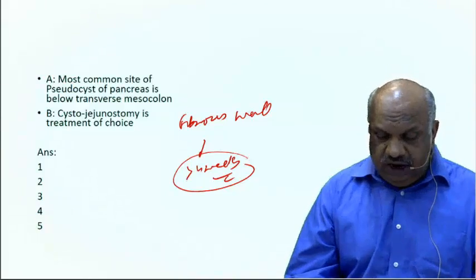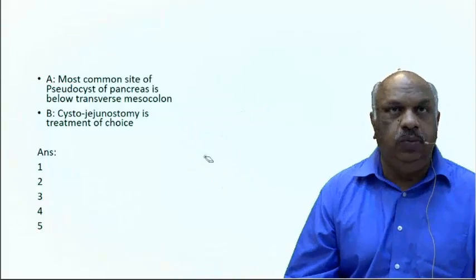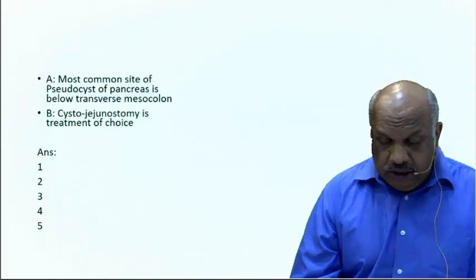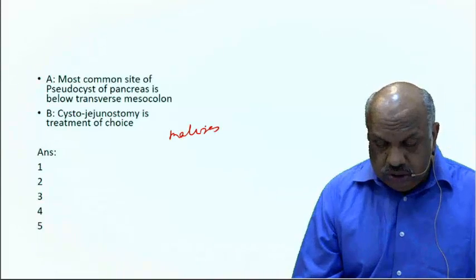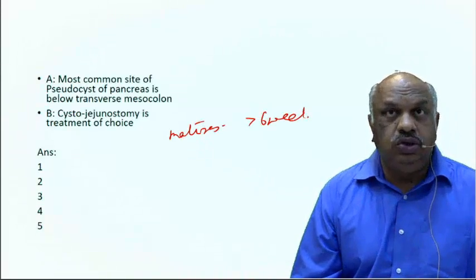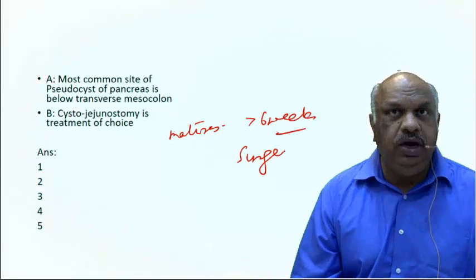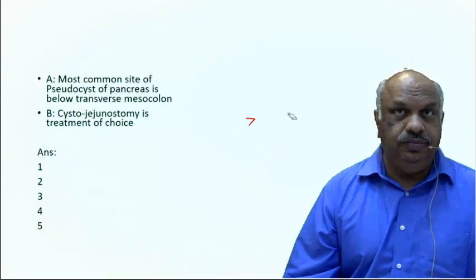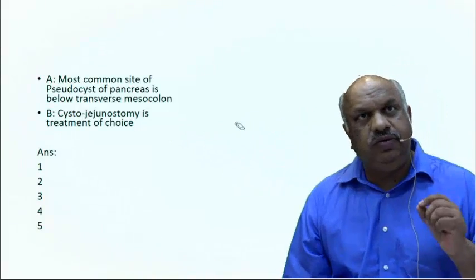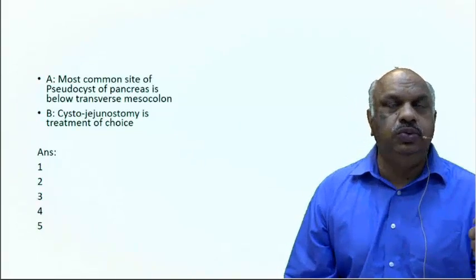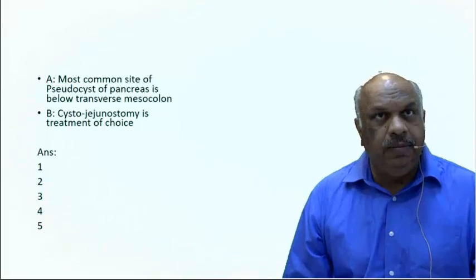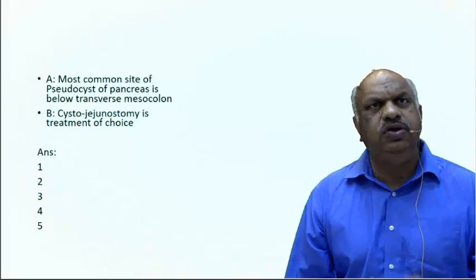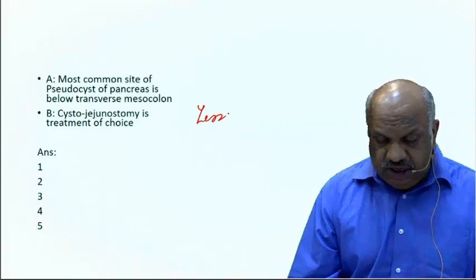The fibrous wall is a reactionary inflammatory wall. It matures only after six weeks, which is why surgery can only be done after six weeks — the wall needs to be mature enough to hold sutures. So pseudocyst is a peripancreatic fluid collection with a fibrous wall, forming after four weeks and maturing after six weeks.